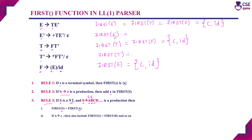Next, we find FIRST(E'). There are two productions for E': E' → +TE' and E' → epsilon. For the first production, the first symbol on the right-hand side is the terminal plus, so by Rule 1 we include plus. For the second production E' → epsilon, by Rule 2 we include epsilon. Therefore FIRST(E') = { +, ε }.